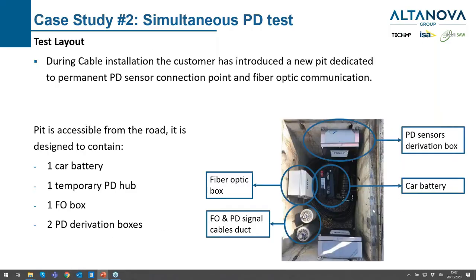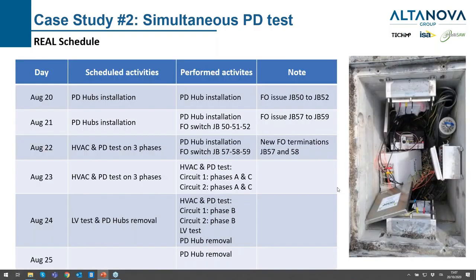During the cable installation, a dedicated pit for PD testing was prepared, with fiber optic signal cables and PD derivation boxes from the two different circuits — three channels from each circuit. There was room enough to install a car battery and the PD temporary hub. This was the six-channel installation with all the fiber optic necessary to perform the test.